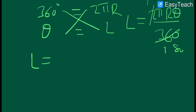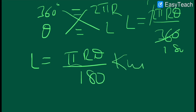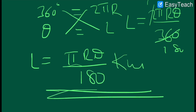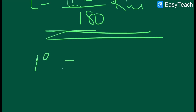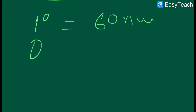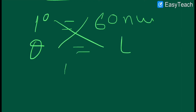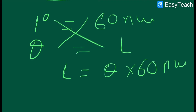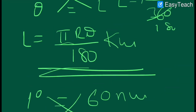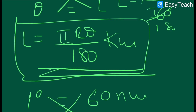The length equals πRθ/180, which gives the distance in nautical miles. We can also find length in terms of kilometers. To find length in kilometers, we consider that 1 degree equals 60 nautical miles. So for a subtended angle theta, by cross multiplication, the length equals theta times 60. This formula gives the length in kilometers. So the length along the great circle can be calculated using πRθ/180 for nautical miles, or theta times 60 for kilometers.